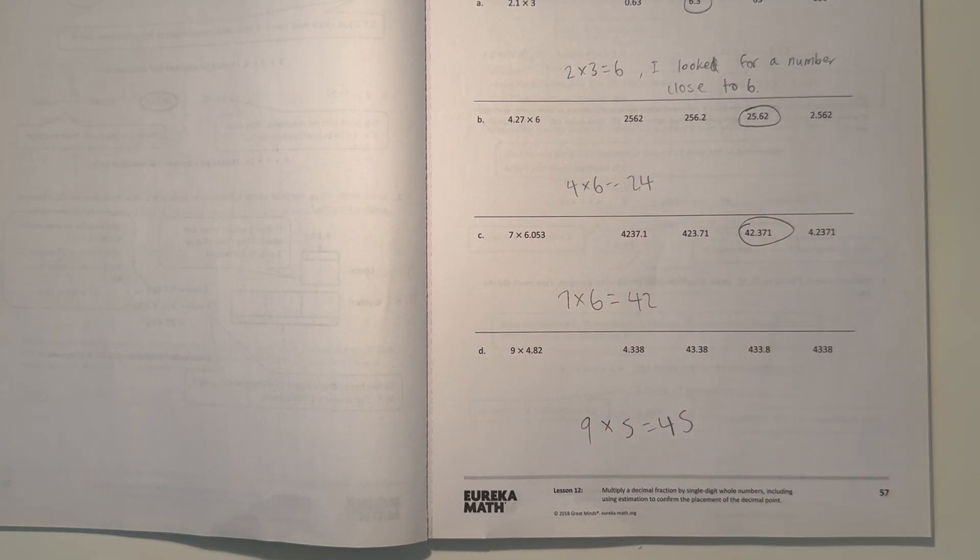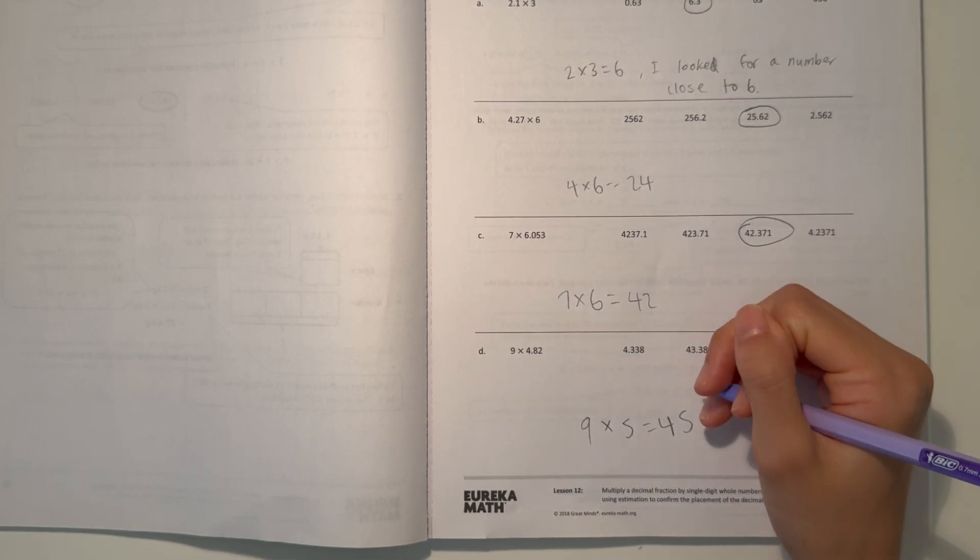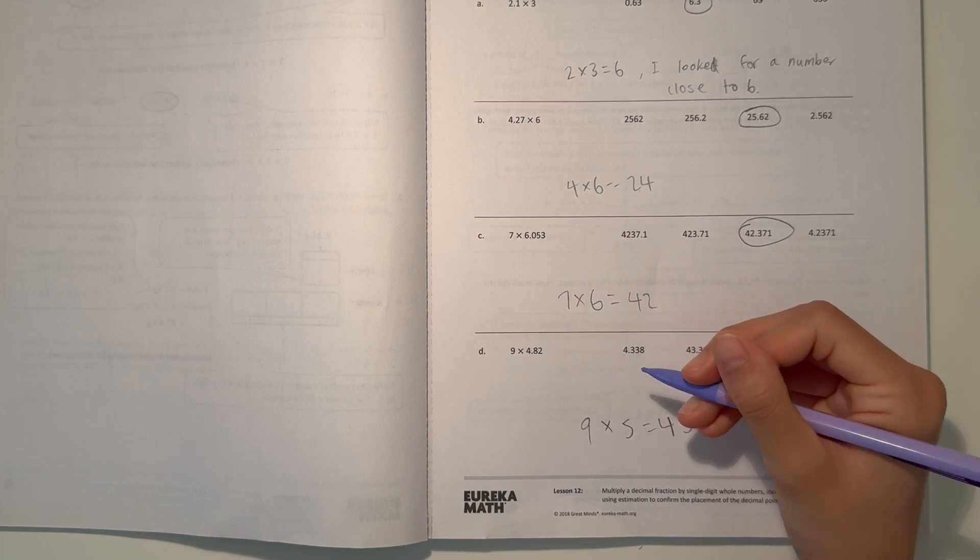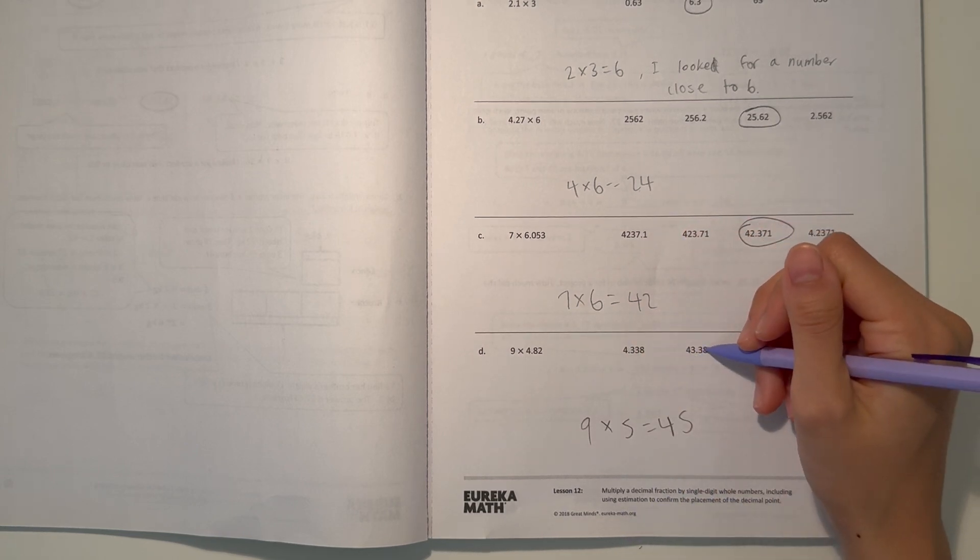But we know it won't be more than 45 because 4.82 is rounded up to 5. So we're looking for a number close or somewhat close to 45. So first one, we have 4.338. That is not close at all. Now we have 43.38. That is actually pretty close. So that might be it.